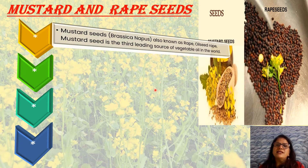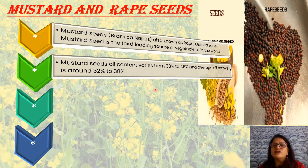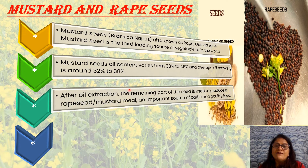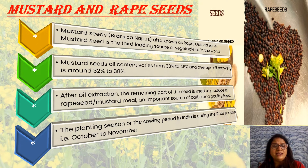Now we will discuss mustard and rapeseed. Mustard seeds, also known as rapeseed oil seeds, are the third leading source of vegetable oil in the world. The oil content varies from 33 percent to 46 percent, and average oil recovery is around 32 to 38 percent. After oil extraction, the remaining part of the seed is used as cattle and poultry feed. The sowing period in India is during the Rabi season, that is October to November.